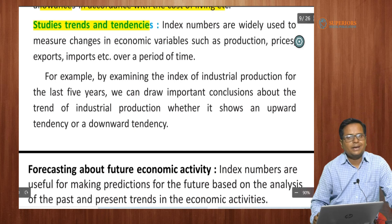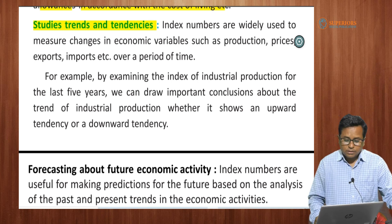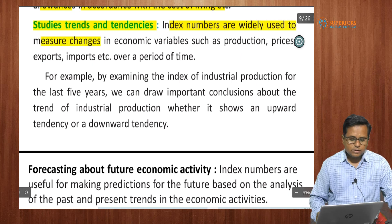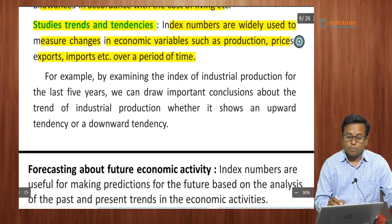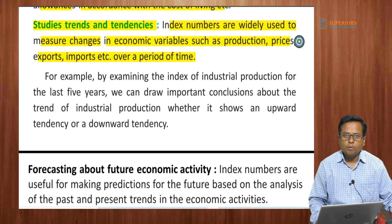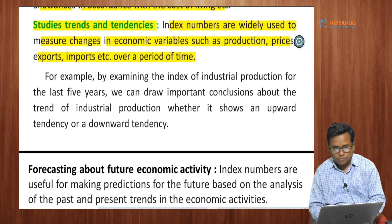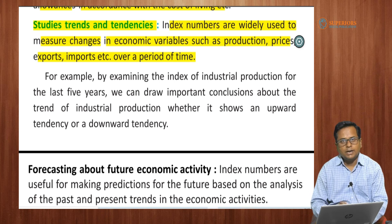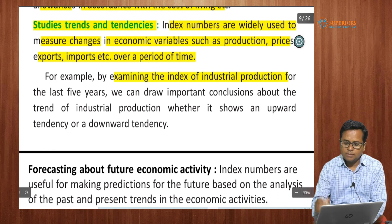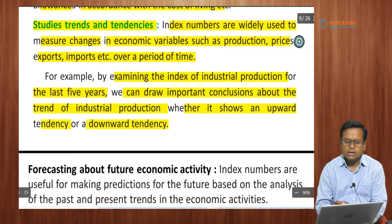Index numbers are useful for studying trends and tendencies in the economy. They are widely used to measure changes in economic variables such as production, prices, export, and import. What kind of changes are taking place in exports, imports, price level, and production can be observed, and accordingly we can see the trends. For example, by examining the index number of industrial production for the last five years, we can draw important conclusions about the trends — whether it shows an upward or downward tendency.